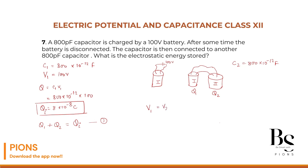Since they are connected in parallel, their potential must be the same — they come to a common potential. The voltage across the first must equal the voltage across the second. It will not be 100 volts; they adjust to a common potential. Using Q = CV, voltage equals Q divided by C. So voltage across C1 equals Q1 over C1, and voltage across C2 equals Q2 over C2, and these two must be equal.